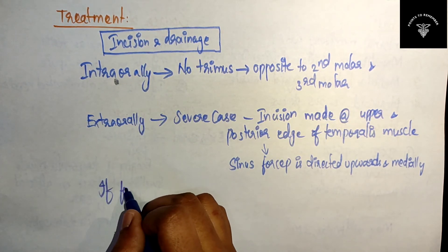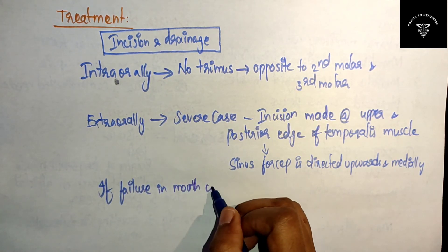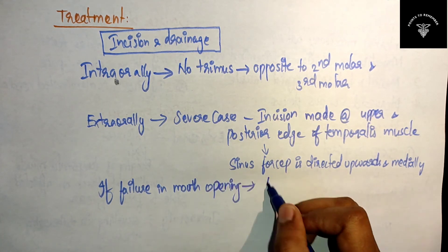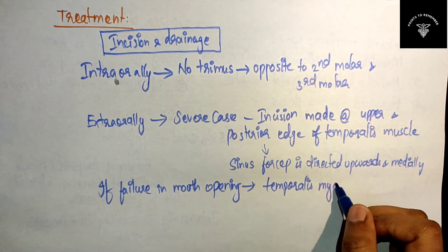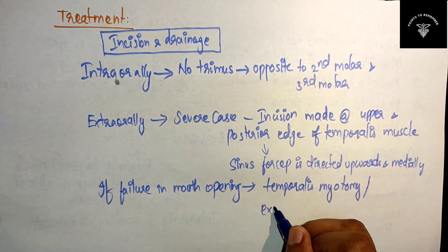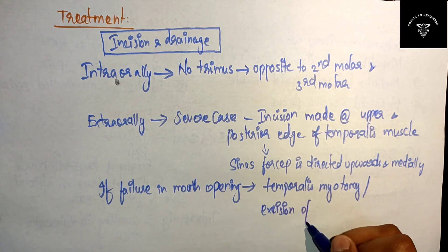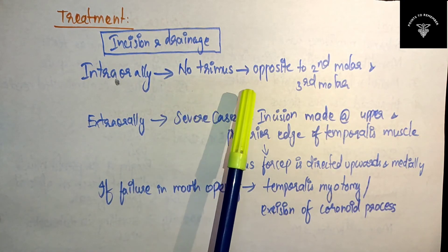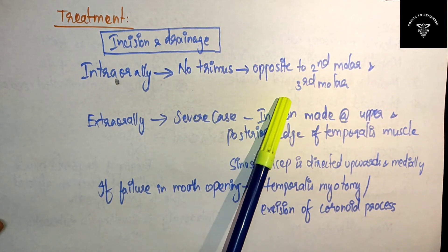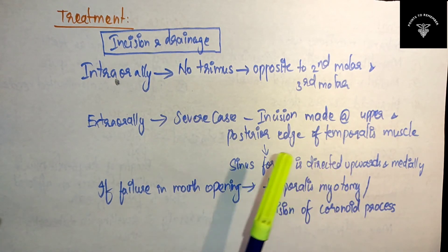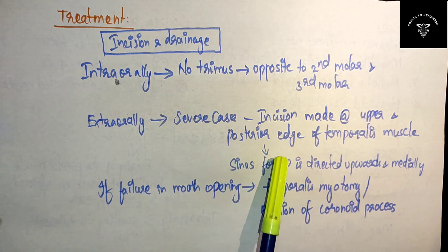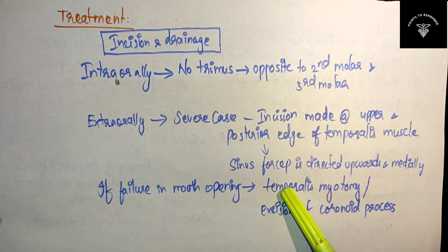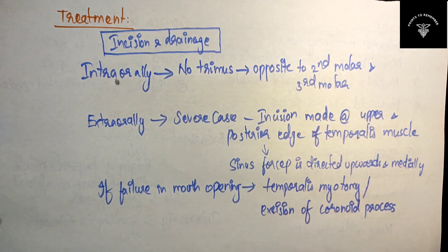If there is failure in mouth opening after drainage, then temporalis myotomy or excision of the coronoid process is performed. After incision and drainage, the wound is sutured. That's all regarding the treatment of infratemporal space infection.